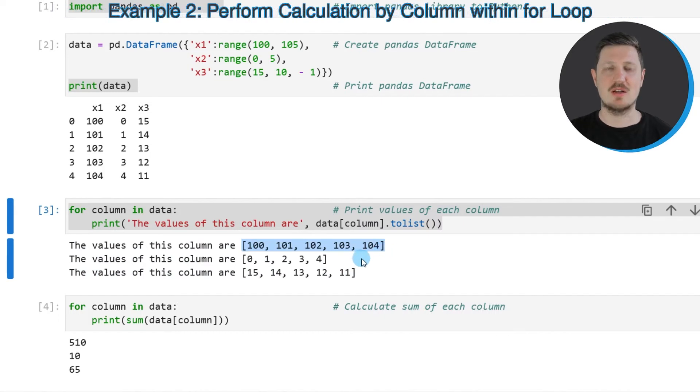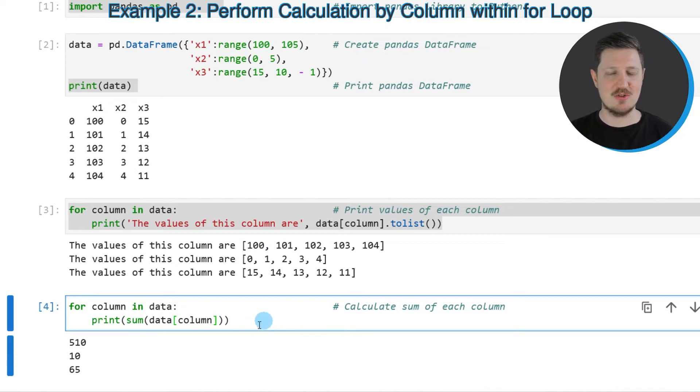We can also perform calculations when we iterate over the columns of a dataframe, as you can see in the next example in the fourth code box. So once again I'm using a for loop to loop over the columns of our dataframe. And then within the for loop I'm calculating the sum of all values in our column.